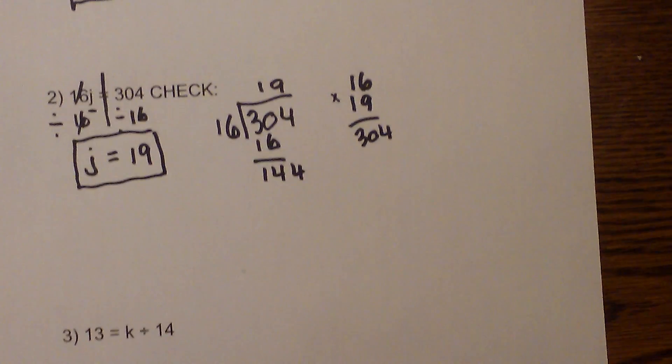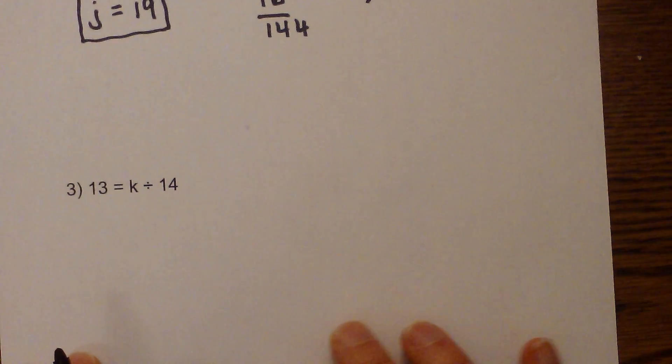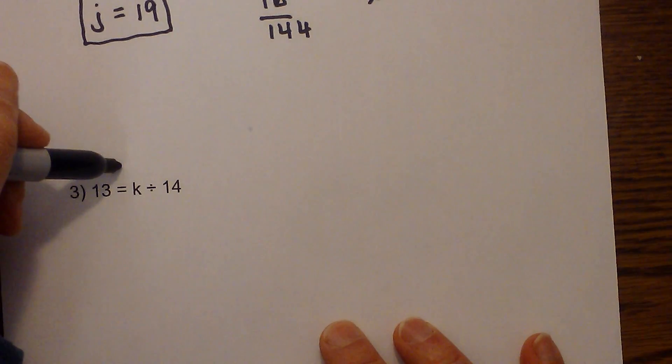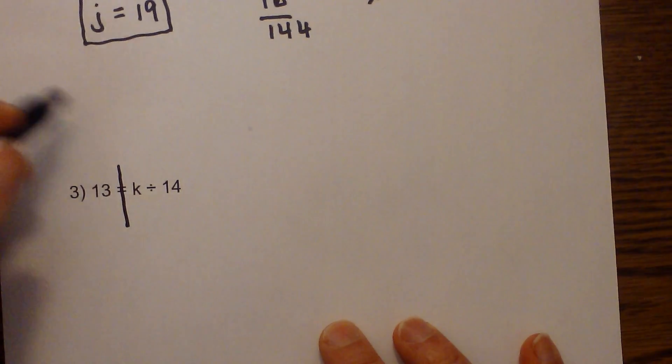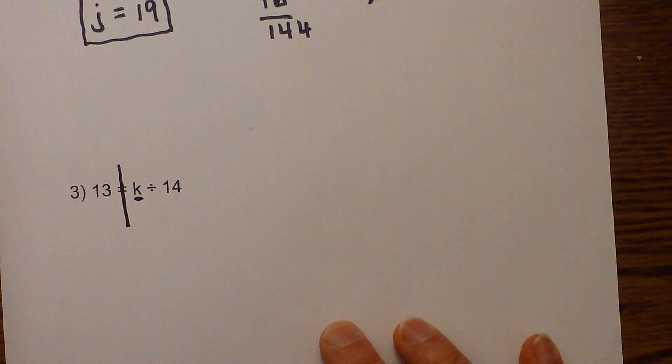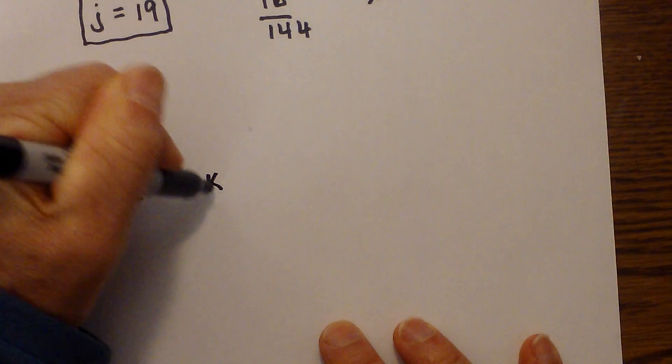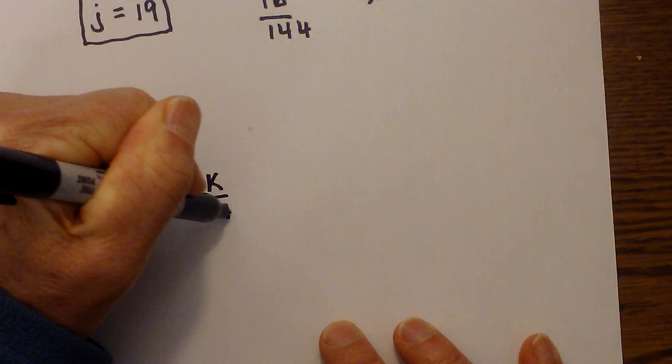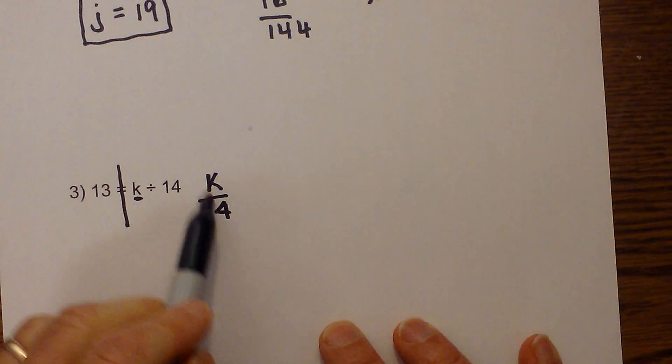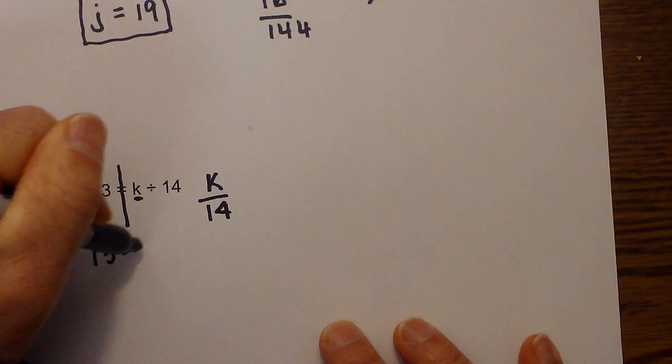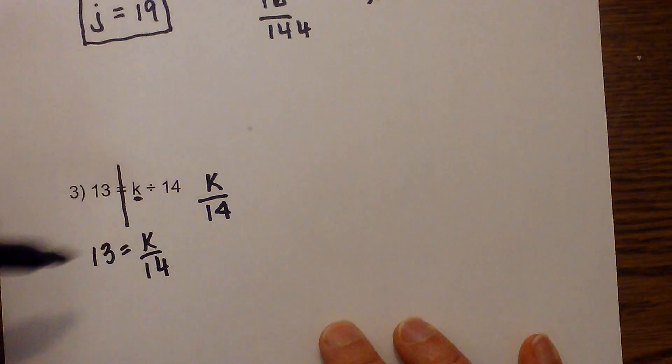Okay and finally the last one. This one may seem a little tricky but if you rewrite it it will make some sense. I'll draw a line down the middle. I have identified my variable which is k, but I'm going to rewrite this as k over 14, and that is the same as division. So I'm going to rewrite it as 13 is equal to k over 14.